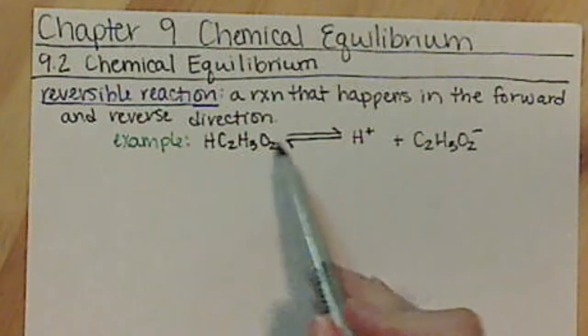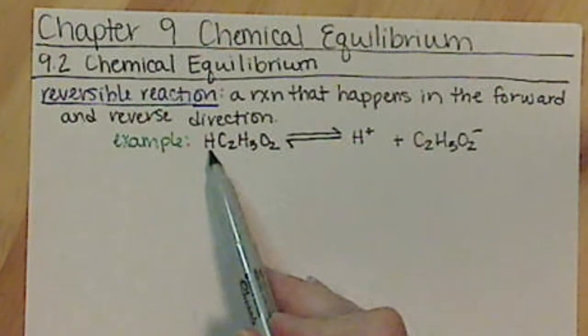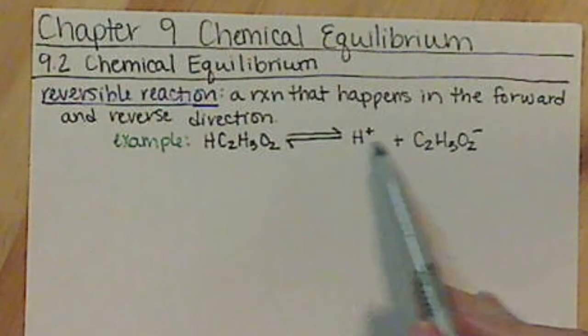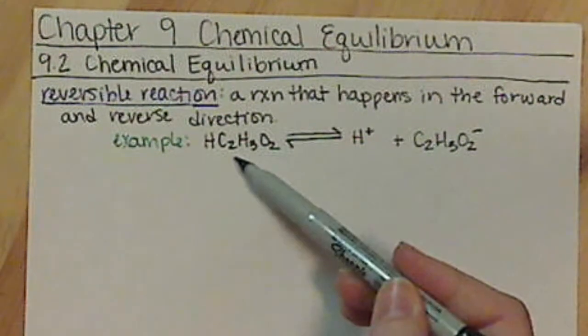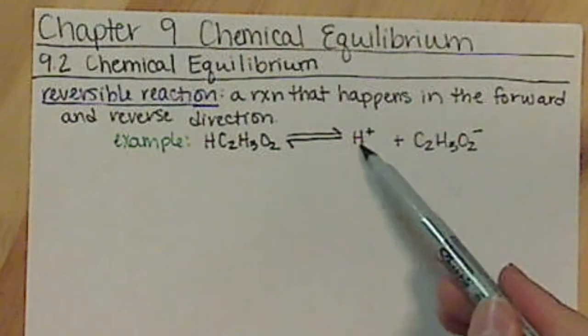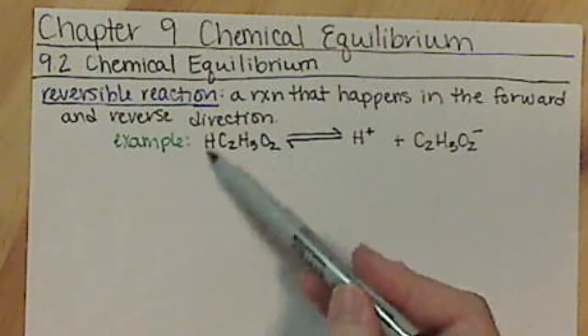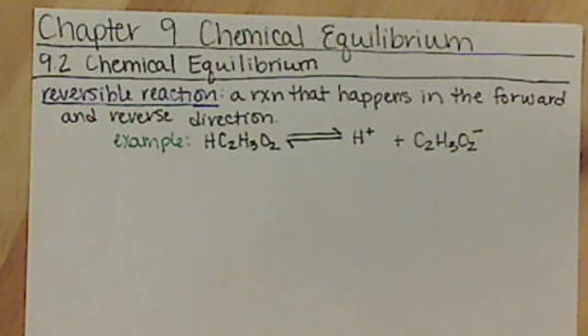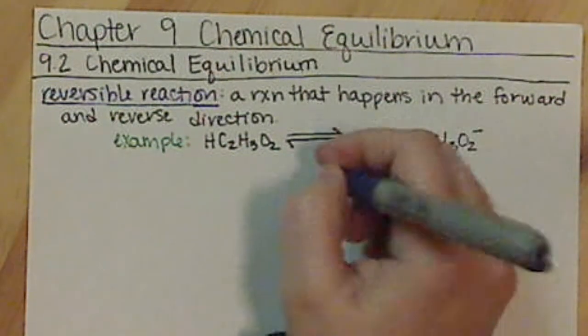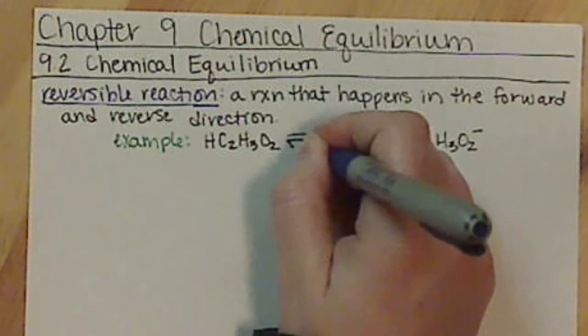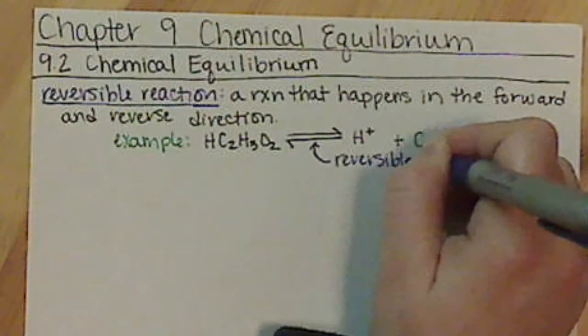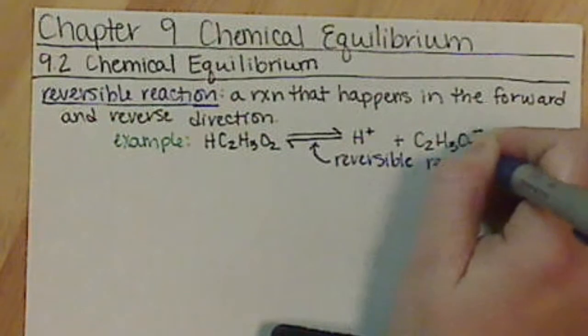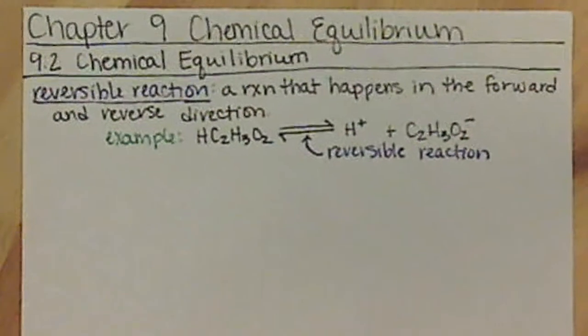What happens is we have a reactant here, it's going to split apart into its ions, but we also have a reverse reaction where some of our ions are going to recombine to form our initial product. This arrow, the double reaction arrow, is what's representing that we have a reversible reaction.